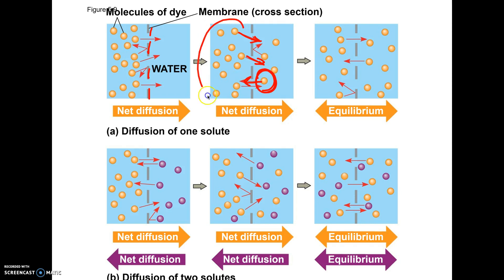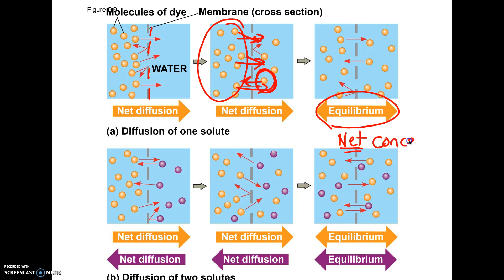Eventually, we reach what's called equilibrium. It's very important that you don't say everything stops at equilibrium — that's not true. There will be no net change in concentration. At that point, similar amounts are going in both directions. This is sometimes called dynamic equilibrium, because everything is still in motion; it's just that the amount going in each direction is the same.